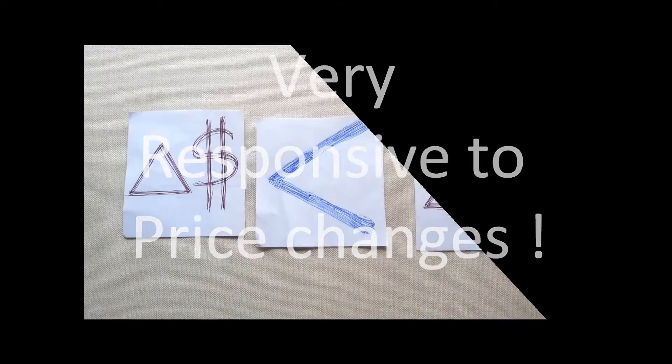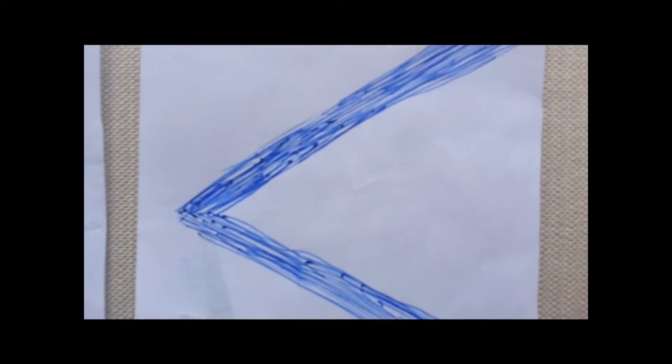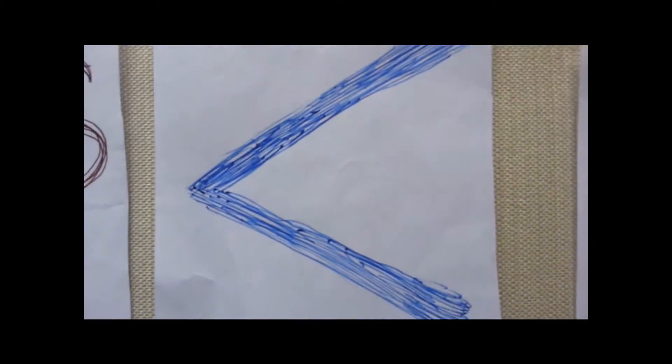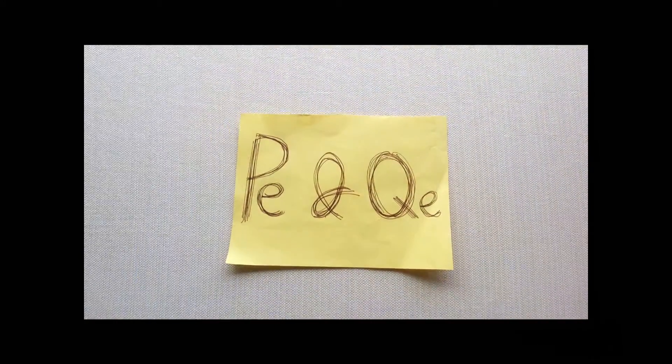The more price elastic the supply of margarine is, the bigger the effect of the increase in demand on the equilibrium price and quantity.